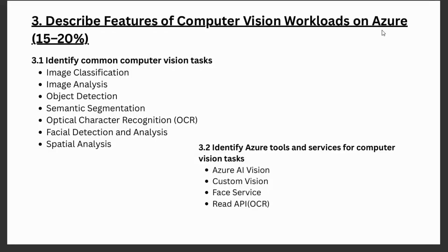The third module is Describe Features of Computer Vision Workloads on Azure. Here we will cover computer vision tasks such as image classification, image analysis, object detection, semantic segmentation, OCR, facial detection, and spatial analysis. We will also explore Azure tools for computer vision like Azure AI Vision, Custom Vision, Face Service, and the Document Intelligence API for OCR. I will attach the PDF covering all these topics in the description of this video.